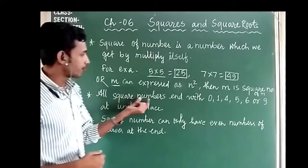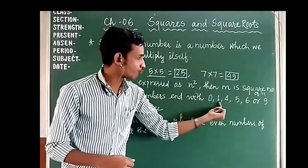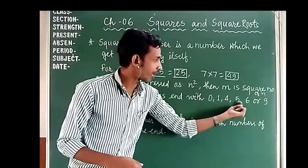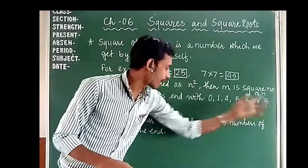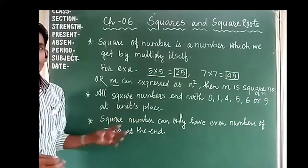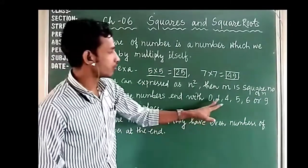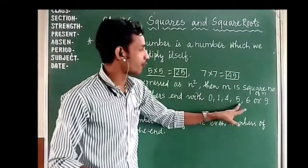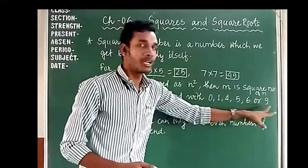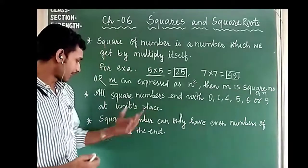Now we will see some properties of square numbers. All square numbers end with 0, 1, 4, 5, 6, or 9 in the units place. All square numbers end with 0, 1, 4, 5, 6, or 9 in the units place.